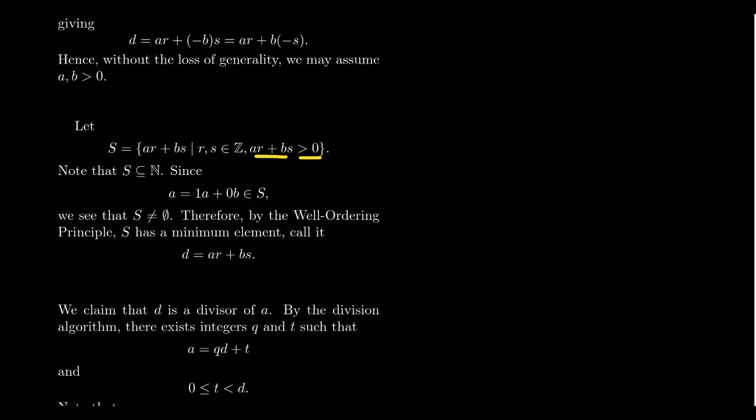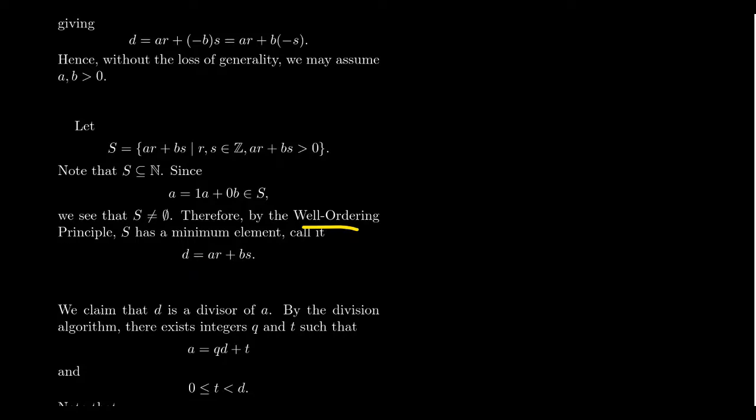The well-ordering principle guarantees that every non-empty subset of natural numbers has a minimum element. Is S non-empty? Since A is positive, A equals 1 times A plus 0 times B is a positive linear combination, so A belongs to S, and S is non-empty. Therefore the well-ordering principle applies, and S has a minimum element. Let's call that minimum element D, and let R and S be the specific integers that achieve this minimum, so D equals AR plus BS.